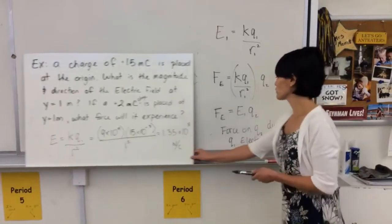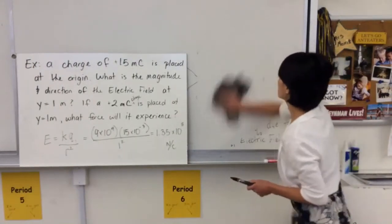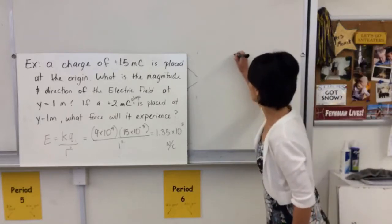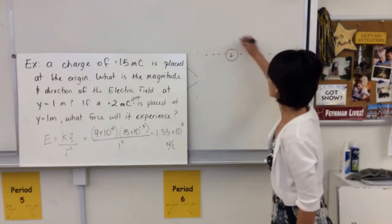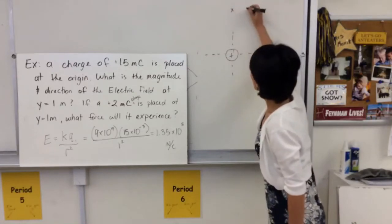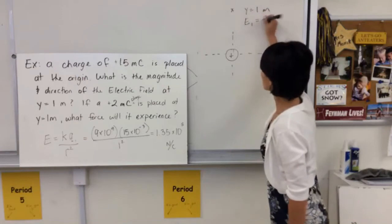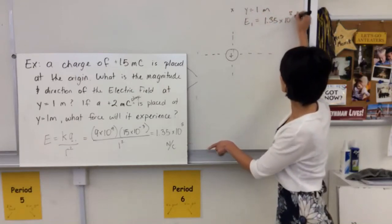So that's the electric field at that point. And so the second part of the problem says, okay, here is my positive charge. Right here. Here's my positive charge. Right here at y equals 1 meter. The electric field due to that charge is 1.35 times 10 to the 8 newtons per coulomb.